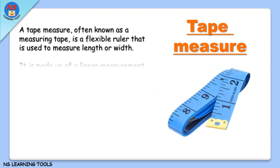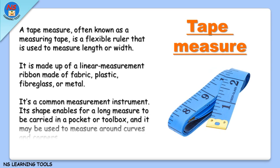Tape measure. A tape measure, often known as a measuring tape, is a flexible ruler used to measure length or width. It is made up of a linear measurement ribbon made of fabric, plastic, fiberglass, or metal. Its shape enables a long measure to be carried in a pocket or toolbox, and it may be used to measure around curves and corners.